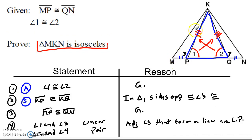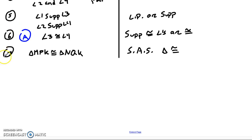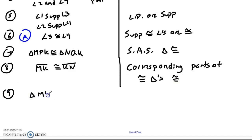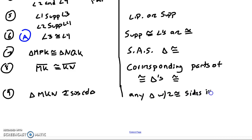Now that those triangles are congruent — these little skinny guys on the outside — it's clearly going to be true that MK is congruent to KN, because they are corresponding parts of those congruent triangles. And finally, triangle MKN is isosceles, because an isosceles triangle is simply any triangle with two or more congruent sides.